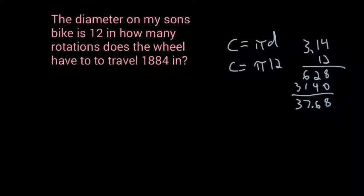So I need to figure out how many times to get 1884. So I'm going to take that 1884 and divide it by my 37.68. So I'm going to move my decimal twice, move my decimal twice. Alright now, so 3768 will go into this 5 times.